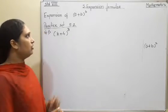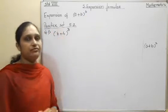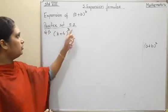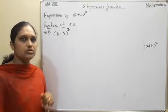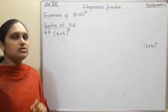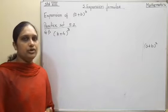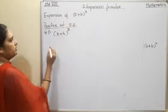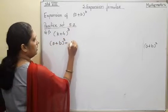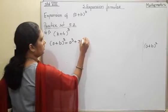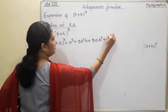After the expansion of (a+b) cube, now we'll turn to practice set 5.2. From 5.2, the first sum is (k+4) cube. When solving this type of sum, first write the expansion or identity you are going to use. So we write: (a+b) cube equals a cube plus 3a squared b plus 3ab squared plus b cube.